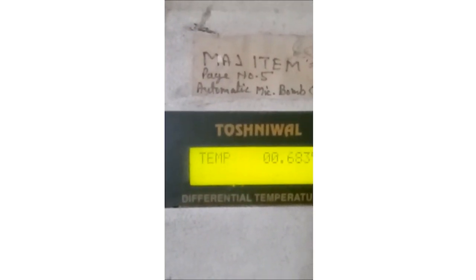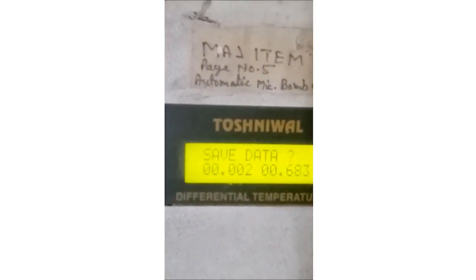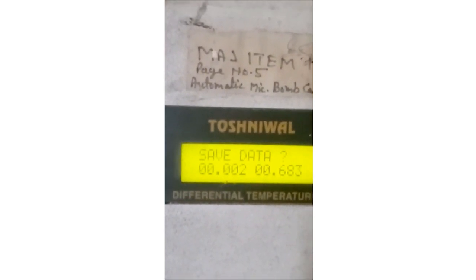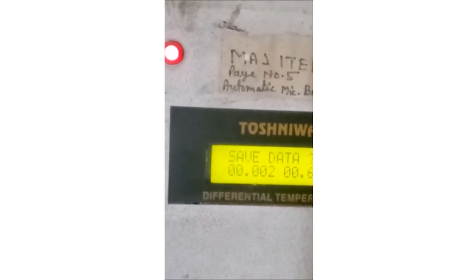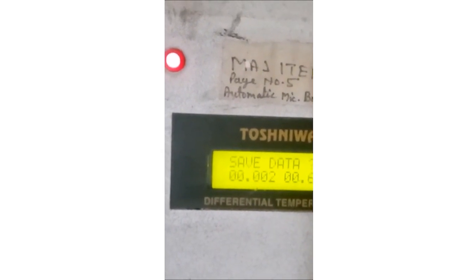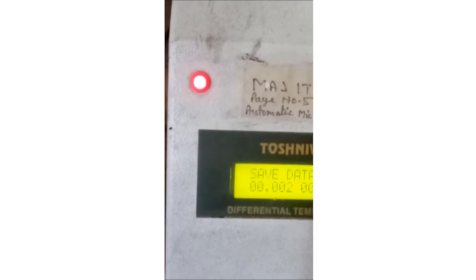Gradually we reach the equilibrium point and the temperature difference becomes fixed. We see here 0.683°C — this is the equilibrium temperature difference, that is T_final minus T_initial. We are getting 0.683°C and it is now constant — it will not change. That is the ΔT value. We record this value. This is the video demonstration for measurement of heating value using the bomb calorimeter.